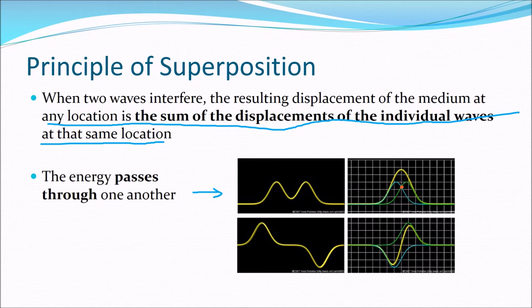If both waves have an amplitude of two and a half, we add that to them again so it becomes twice as high. At another point, one wave has an amplitude of about one and the other about three, so we add those together for a resultant amplitude of about four from the equilibrium position.